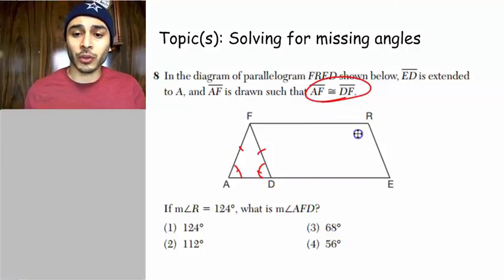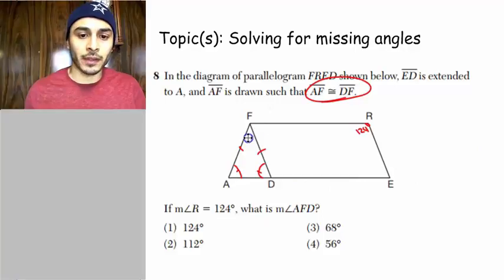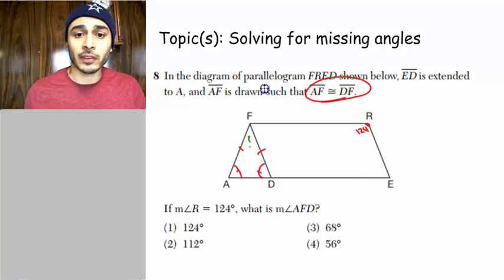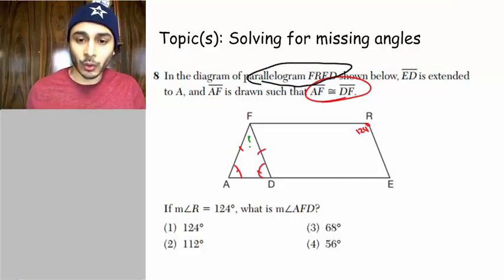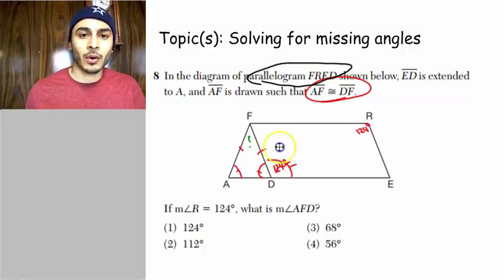So angle R is 124. So label that 124. What's the measurement of angle AFD? So they want this one. Well, since this is a parallelogram, then we know this angle is automatically 124 degrees. And I'm talking about this angle right here. This is automatically 124.